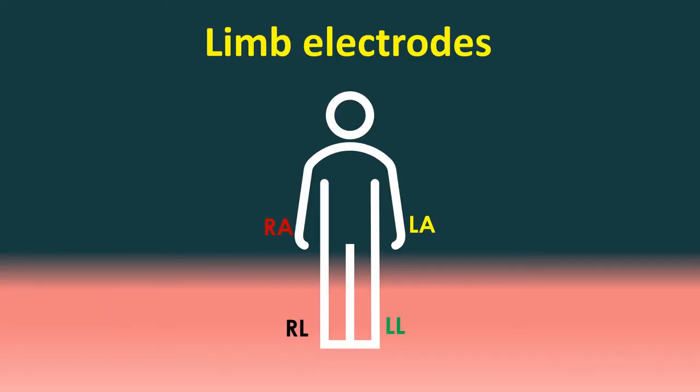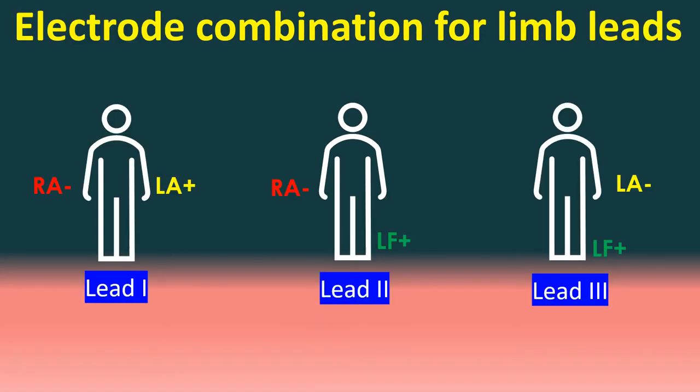ECG uses four limb electrodes on each of the four limbs. The electrode on the right leg is considered electrically neutral, while the other three are active electrodes. Electrode combinations for limb leads are as follows.